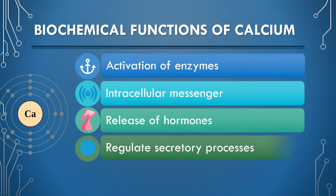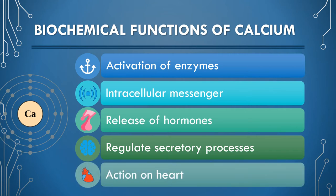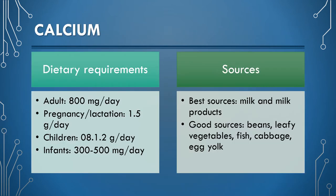Calcium helps to release certain hormones from the endocrine glands. Calcium regulates microfilament and microtubule-mediated processes such as endocytosis and exocytosis. Calcium acts on the myocardium and increases the force of contraction of the heart. The dietary requirement for an adult is 800 mg per day.